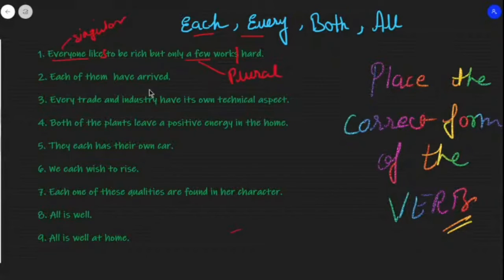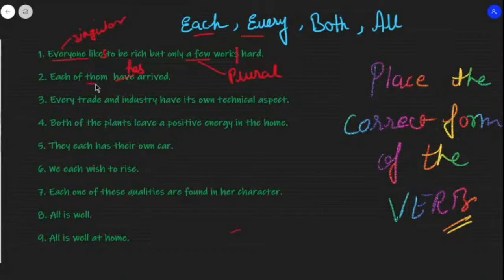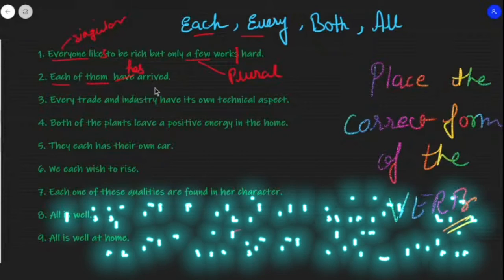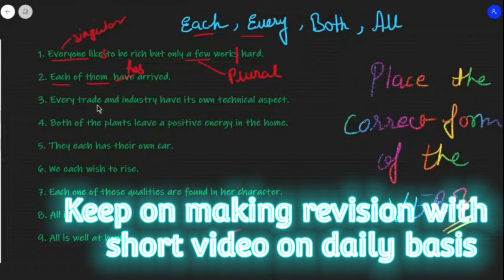'Each of them has arrived.' Though after 'of' we have a plural form, because we have 'each' before it, we use the singular helping verb 'has.' So the correct sentence is: 'Each of them has arrived.'